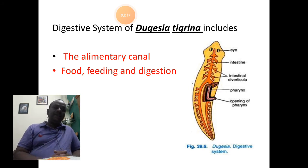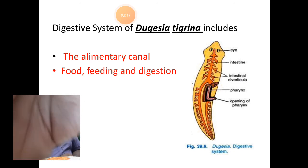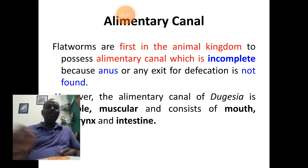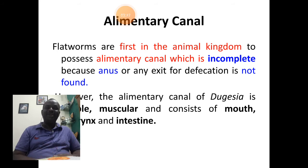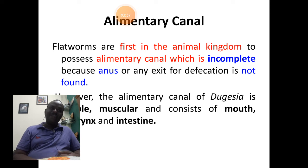The alimentary canal is said to be very simple — it is called a simple alimentary canal because it includes a very small number of parts: mouth, pharynx, and intestine.